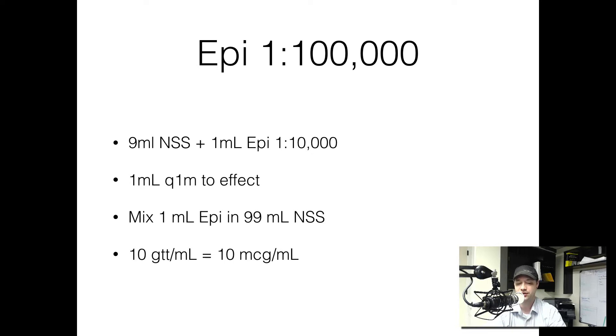Then we're going to take this 1 in 100,000 that we have drawn up. We're going to give 1 milliliter aliquots every minute or so to try to get the pressure above 90 systolic. This is the whole goal of giving this drug.